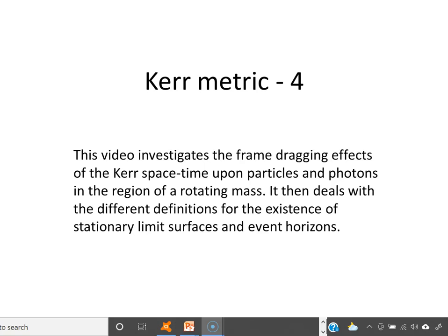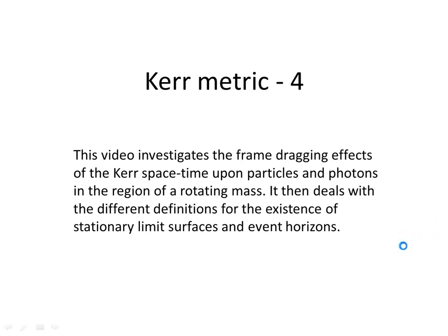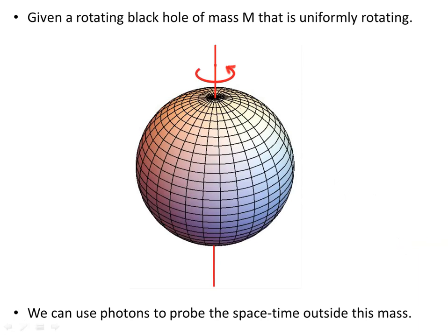This video investigates the frame dragging effects of the Kerr spacetime upon particles and photons in the region of a rotating mass — a rotating black hole. It then deals with the different definitions for the existence of stationary limit surfaces and event horizons. Given a rotating black hole of mass M that is uniformly rotating, we can use photons to probe the spacetime outside this mass.